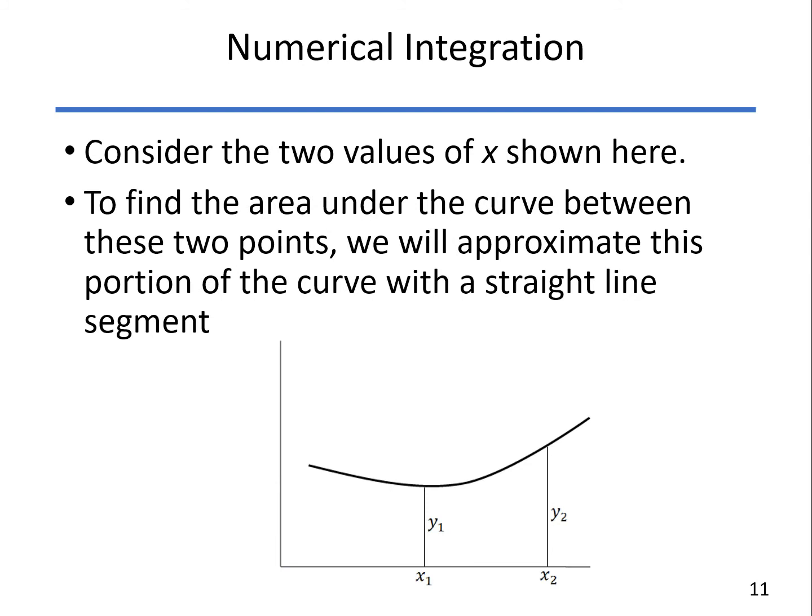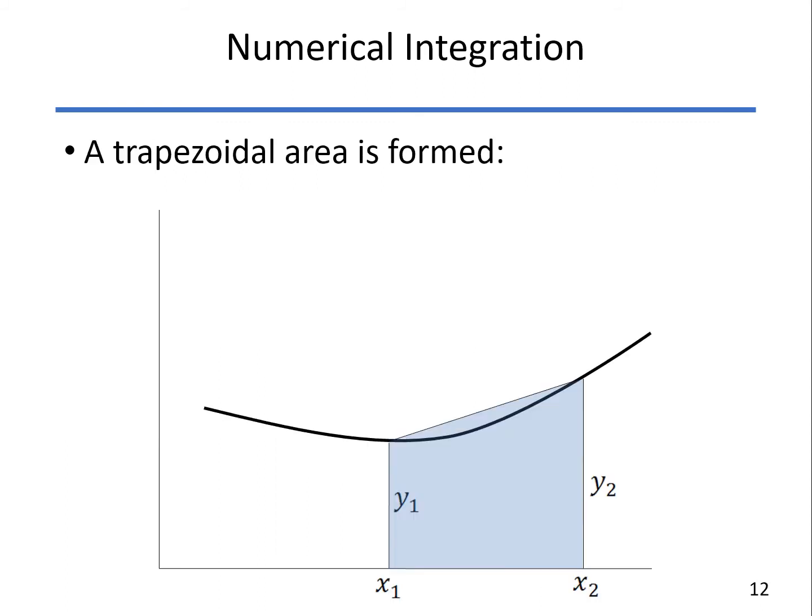Now, we want to estimate that with numerical integration. So the first thing is we divide this into increments, and then we assume, just like linear interpolation, we make an approximation that y1 and y2 are connected by a straight line. That forms a trapezoid, which is why our method here is called the trapezoid rule or trapezoid method. The area of the trapezoid is simply the average height, so one-half y1 plus y2, times the base, which is x2 minus x1.